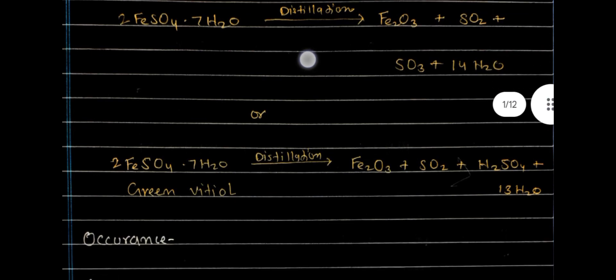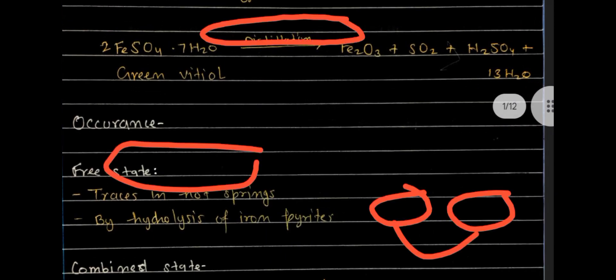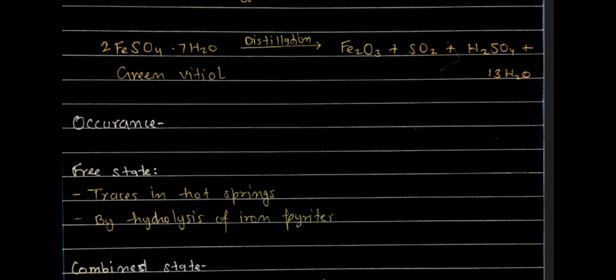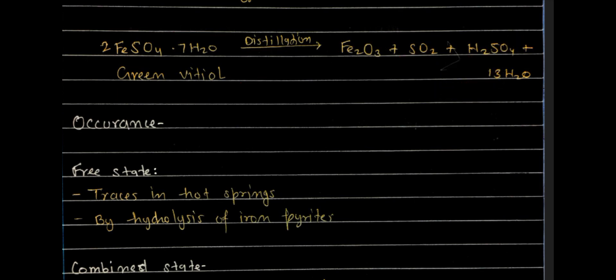Here you can see that green vitriol, that is FeSO₄·7H₂O, gets distilled to form ferric oxide, sulfur dioxide, sulfuric acid, and three molecules of water. You can use both reactions to represent the formation of sulfuric acid using green vitriol.